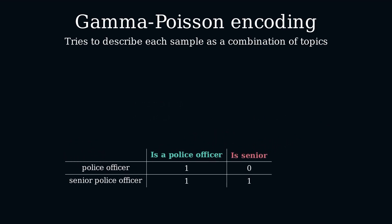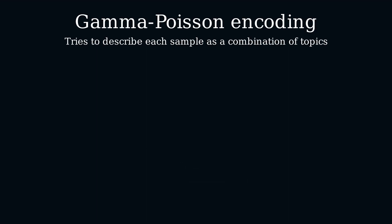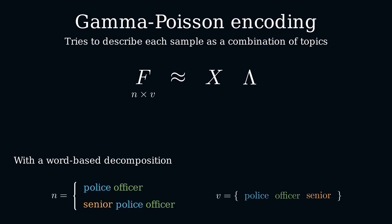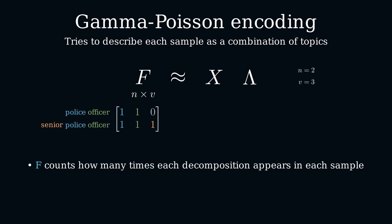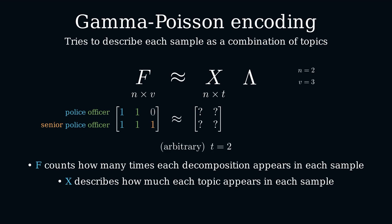In practice, we don't want to do it by hand — we want to do it algorithmically. Mathematically, there is a nice way to model this with the formula f ≈ x × lambda, which we want to optimize. f is a matrix of shape n times v, where n is the number of samples and v is the cardinality — the number of unique values in the vocabulary. f is a count matrix of each unique value in the string decomposition. x is a matrix of shape n times t, where t is the number of topics, also called latent categories, we want to capture. The number of topics we choose is arbitrary: using more tends to capture more specific topics, while using less tends to capture more broad concepts. x is the encoding we want the computer to figure out.